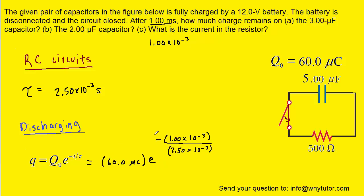When we simplify, the charge on the capacitor is approximately 40.2 microcoulombs. The key idea is that this 40.2 microcoulombs — present 1 millisecond after the switch was closed — is distributed across the original two capacitors. So we cannot say both capacitors each hold 40.2 microcoulombs; that charge is distributed between them.